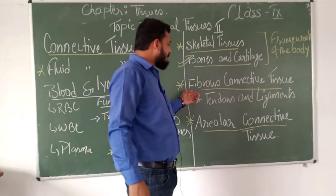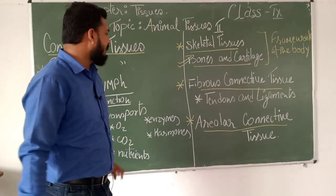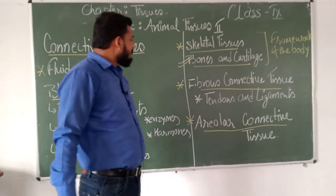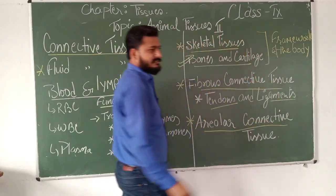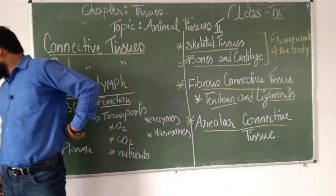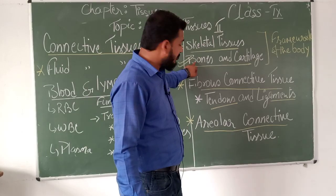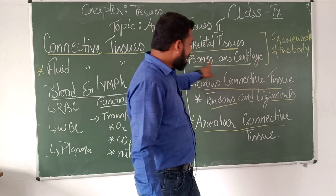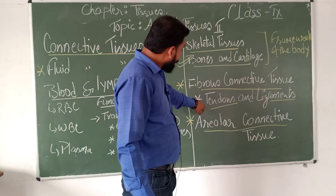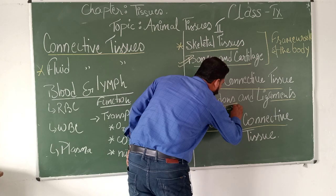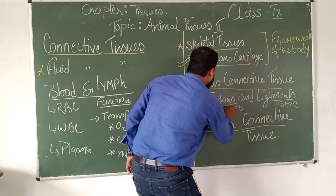Then we come to fibrous connective tissue. We have bones, cartilages, and muscles, and fibrous connective tissue are of two types: first is tendons and second is ligaments. What do tendons do? Tendons join the muscle to the bone. Ligaments connect bone to bone. These act as connective tissue — they connect bone to bone, or they connect muscle to the bone.